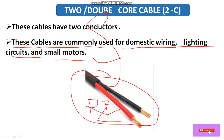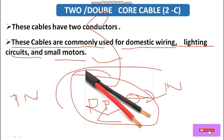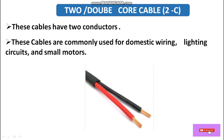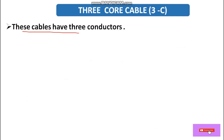In a two core cable we have phase and neutral — that is, the black wire for neutral. Generally, where we are doing wiring for only phase and neutral, we can use this two core cable. It is generally used for domestic wiring, lighting circuits, and small motors.